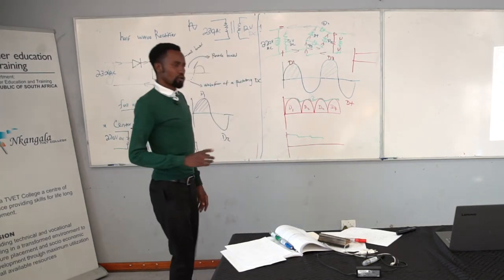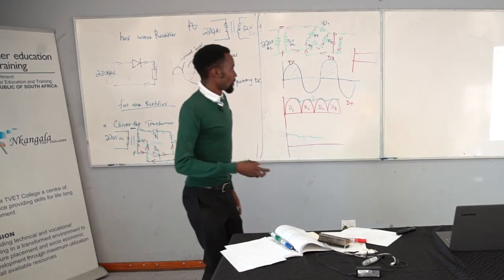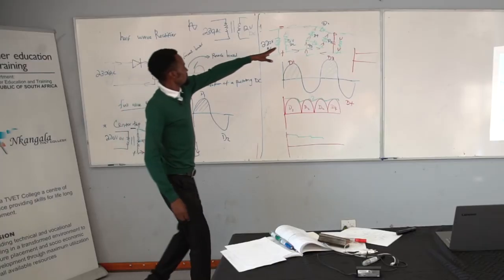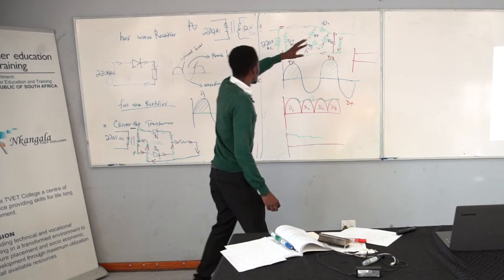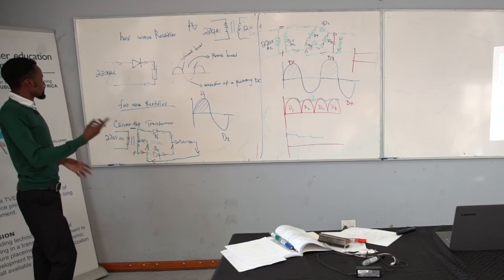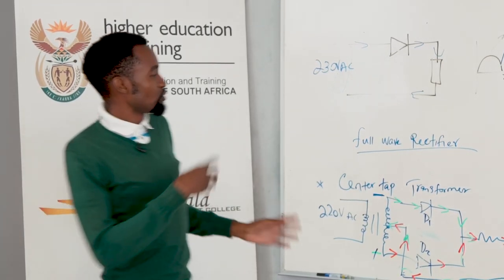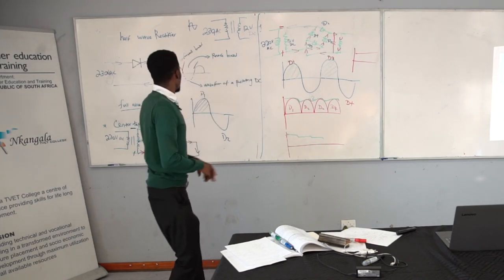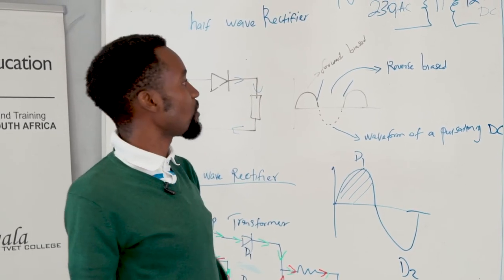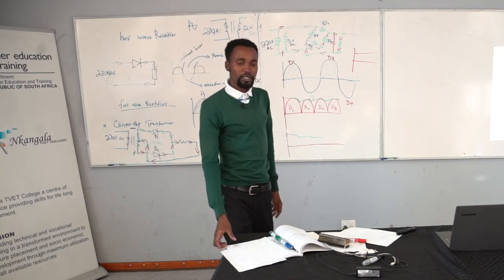For conclusion: when checking previous test or exam question papers, they normally ask students to explain the operation of the bridge rectifier using four diodes, or to explain the half wave rectifier. If they ask you to explain the operation of a full wave rectifier, it is up to you to use center tape or bridge rectifier. Another question they can ask is the difference between center tape transformer and the bridge rectifier — which has advantages and also disadvantages.